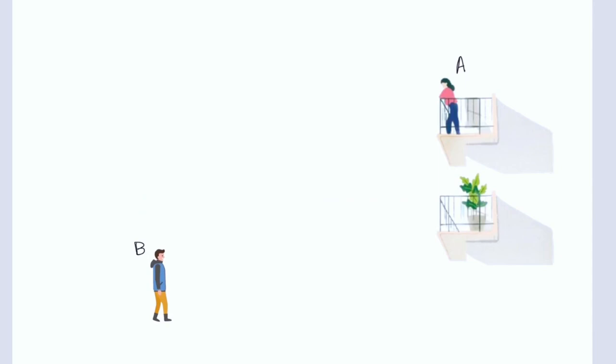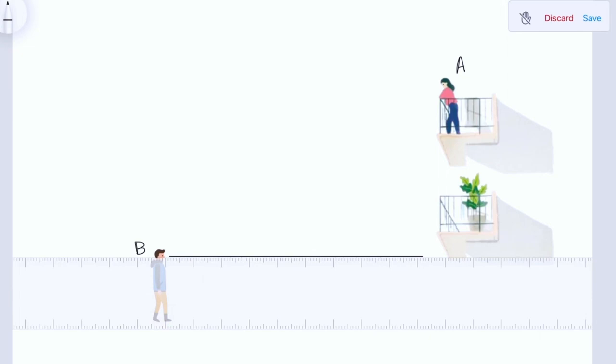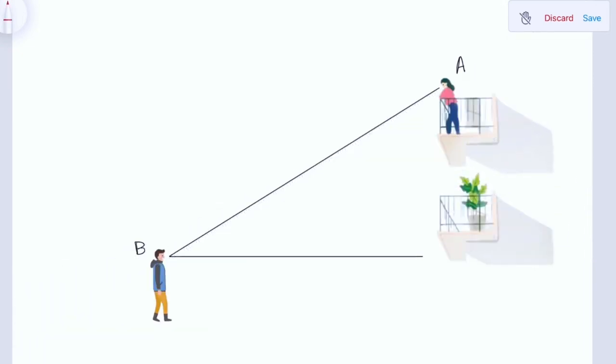So in this diagram we have person A and person B. To see person A, person B has to look up from this horizontal line. Joining A and B will give us the line of sight in this case. For person B, this is the angle of elevation of A from B.